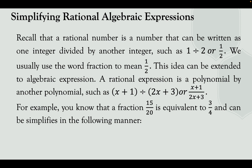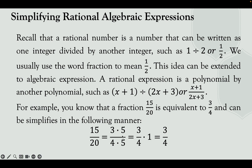For example, the fraction 15 over 20 is equivalent to 3 fourths, and can be simplified as follows. The common factor is 5, so we factor 15 as 3 times 5 and 20 as 4 times 5. Since 5 over 5 simplifies to 1, the remaining fraction is 3 fourths times 1. So the simplest form of 15 over 20 is 3 fourths.